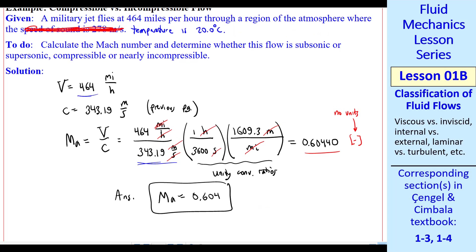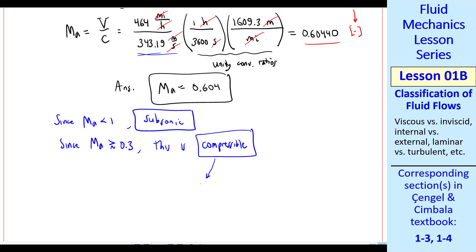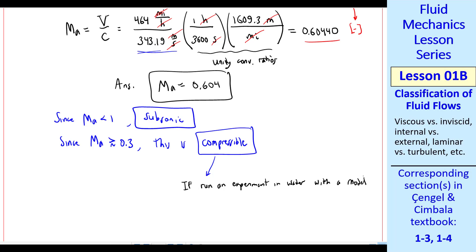Well, to answer the question, we've calculated the Mach number. Is this subsonic or supersonic? And is it compressible or nearly incompressible? Well, obviously, since Mach number is less than one, it's subsonic. Since Mach number is greater than 0.3, this is compressible. Tying in with the previous lesson, if you run this experiment in a liquid like water with a model, you could have significant error in any kind of measurements you make because this water is incompressible or approximated as incompressible, whereas the air itself here is compressible. And this flow, the Mach number is high enough that compressibility effects are important.